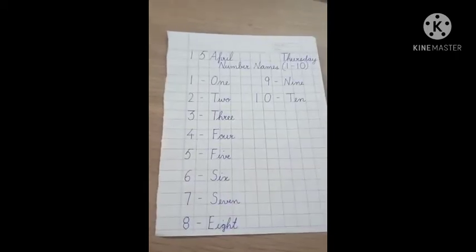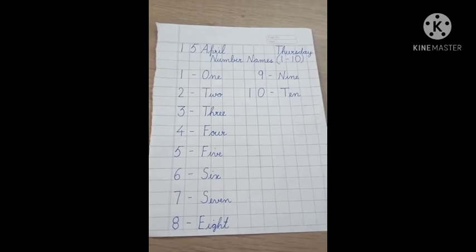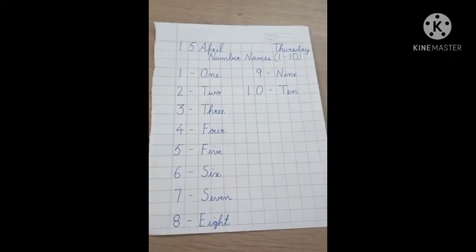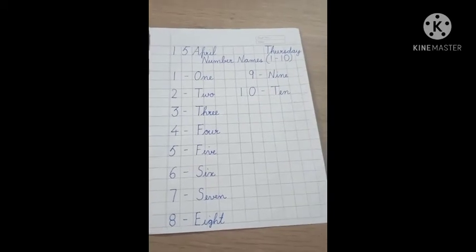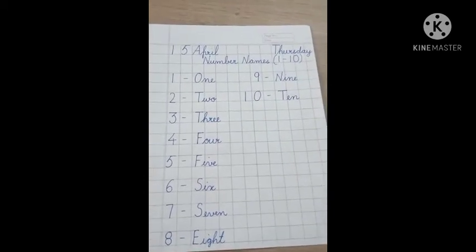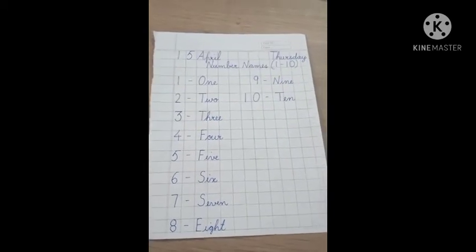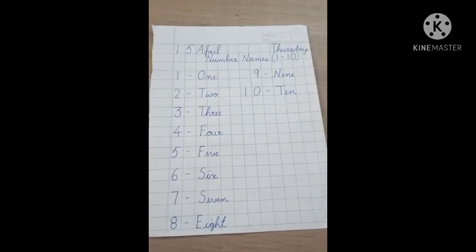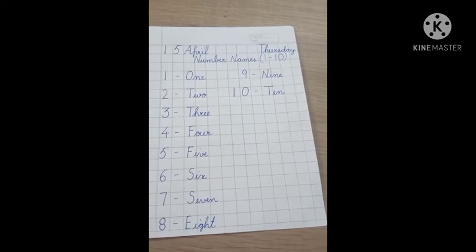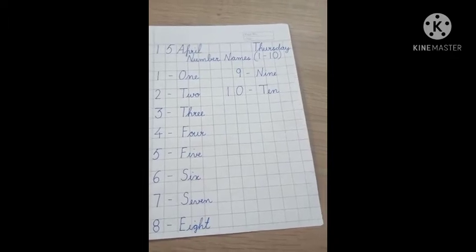See, formation of 1 is different. Formation of 2 is different. Like this, spellings also, names also are different. So what are we going to do? We are going to write the number names in our notebook. For this, everyone, you have to take out your pencils. You have to take out your maths notebook for writing number names.